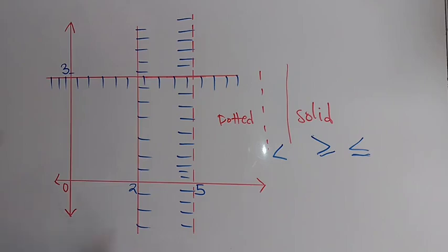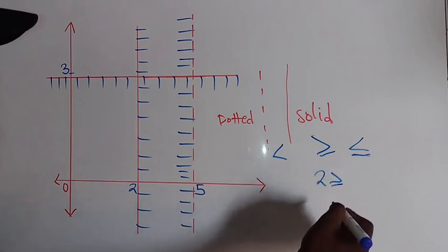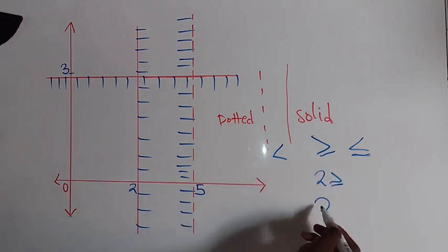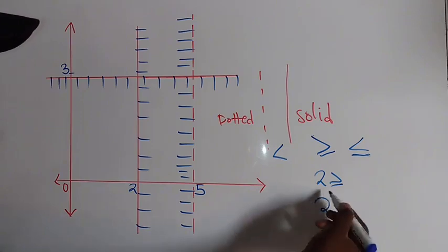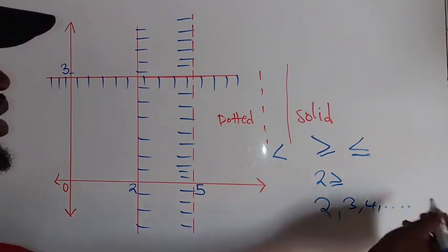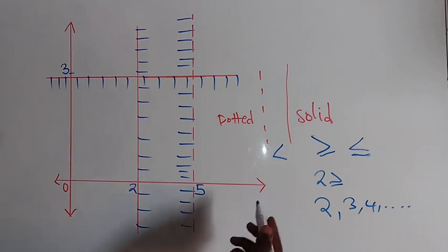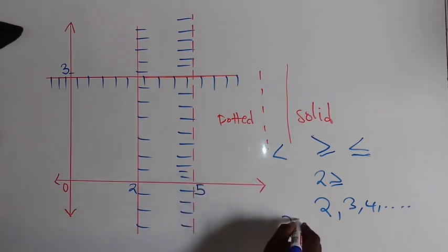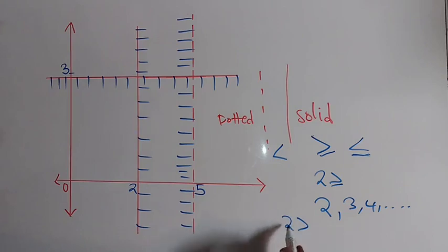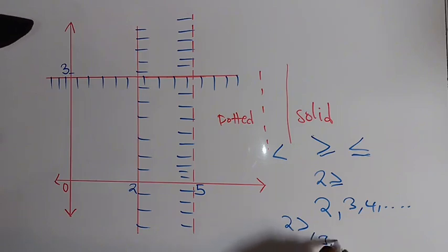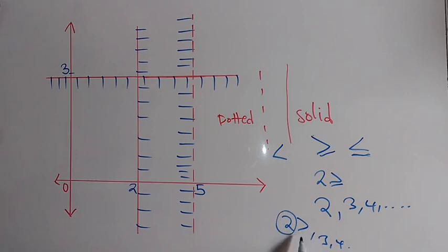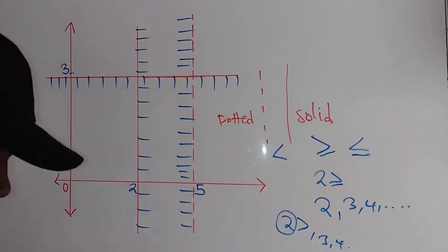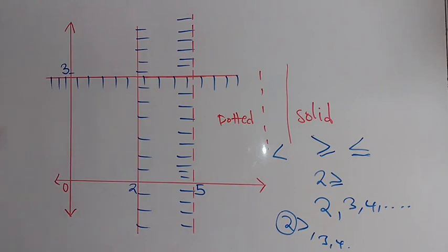With a solid line, the value where the line is located is part of the solution set. For example, if I say two greater than or equal to, I start with two itself because it's equal to itself, then consider numbers greater than it — three, four, and so on. If it's just greater than two, I only consider numbers greater than two and won't include two itself.